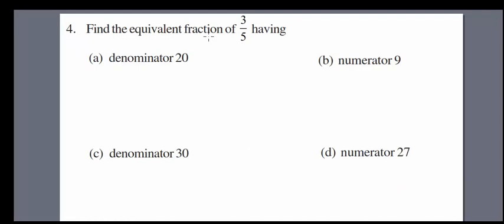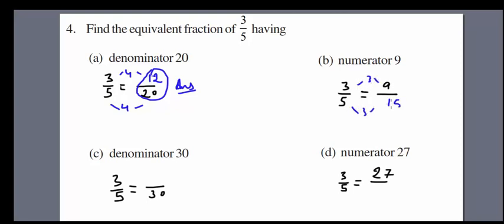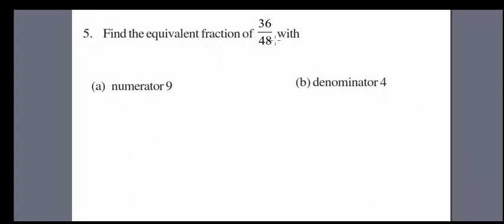Fourth part: find the equivalent fraction of 3 over 5 with given conditions. Write down what is given and find what is missing. For example, 4 times 3 is 12 and 4 times 5 is 20, giving 12 over 20. For part b: 3 times 3 is 9 (numerator is 9) and 5 times 3 is 15 (denominator is 15). For part c: multiplying by 6 gives 18 over 30. For part d: 3 times 9 is 27 and 5 times 9 is 45, giving 27 over 45.